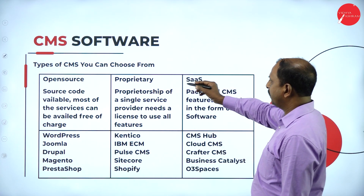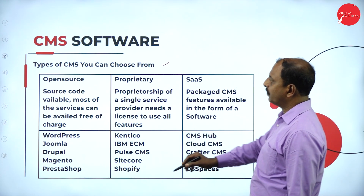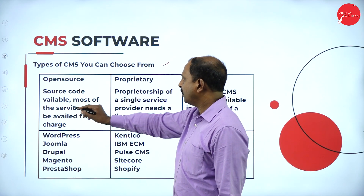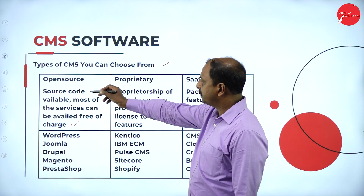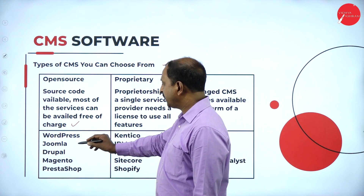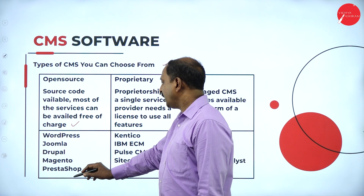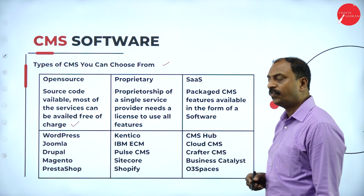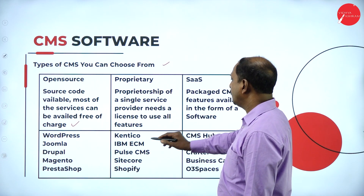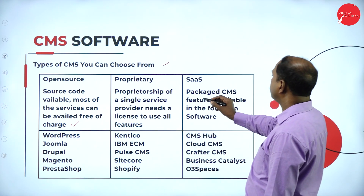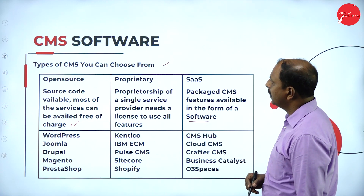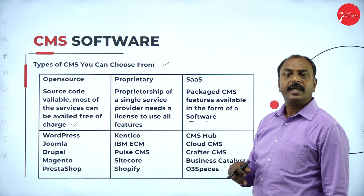There are different types of CMS to choose from: open source and proprietary software. Open source means the source code is freely available — most services can be used free of cost. Examples of open source CMS include WordPress, Joomla, Drupal, Magento, and PrestaShop. Proprietary software has an owner and requires a license. These are the different kinds of CMS software packages available.